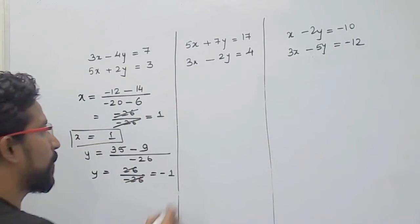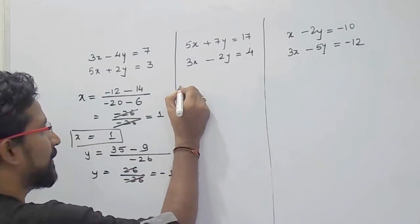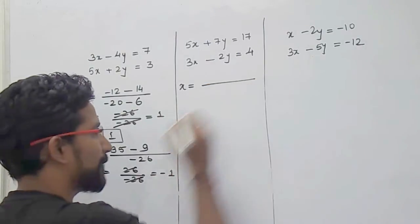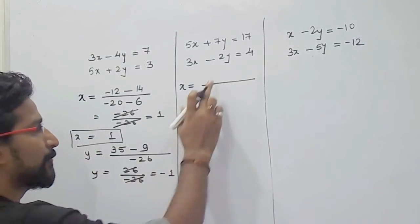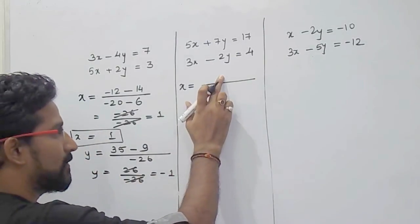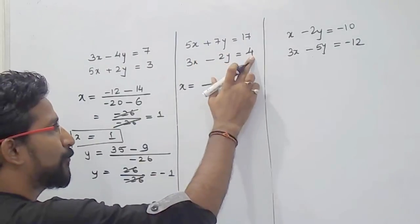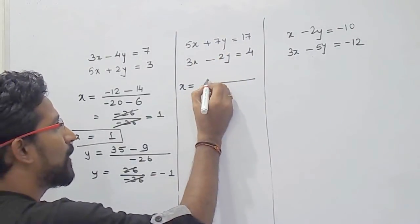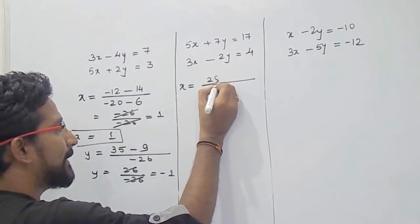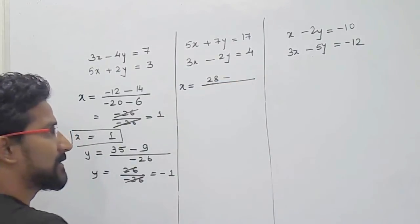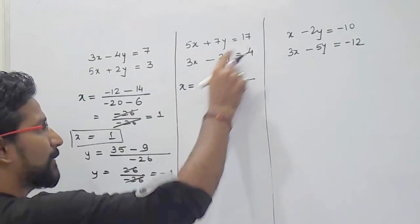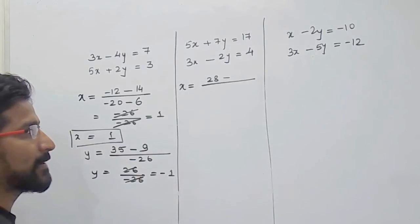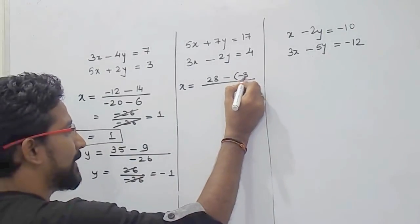We will see one more example. To find the value of x, for the numerator: first cross-multiply 7 into 4, which is 28, then cross-multiply 17 into minus 2, which is minus 34.